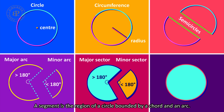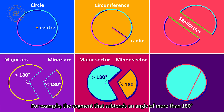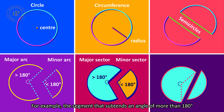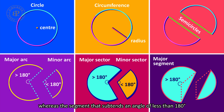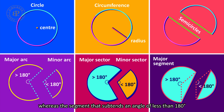A segment is the region of a circle bounded by a chord and an arc. The segment that subtends an angle of more than 180 degrees at the center is known as the major segment, whereas the segment that subtends an angle of less than 180 degrees at the center is known as the minor segment.